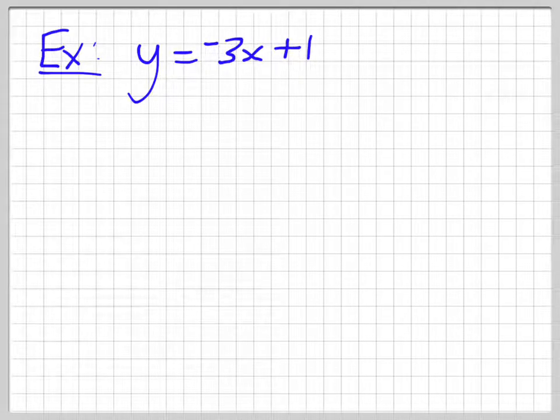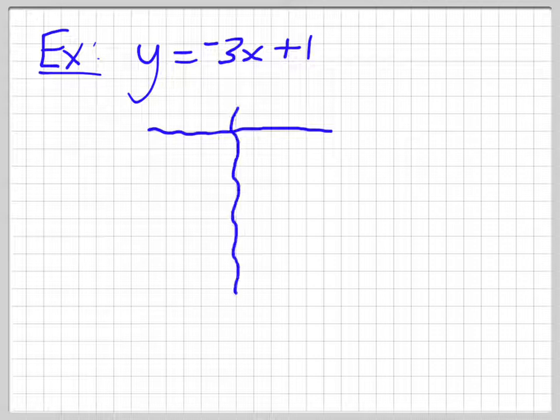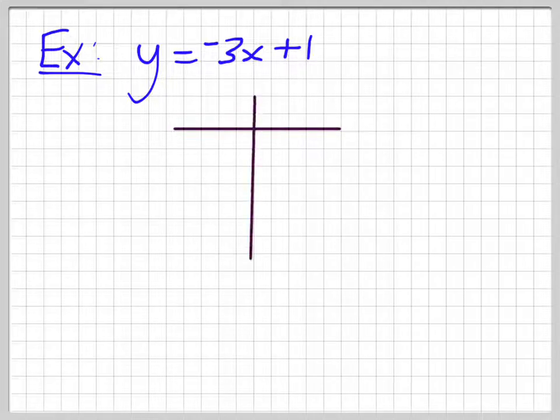So in order to make a table of values, basically we choose our x values whatever we want them to be. I'll make a straight line, make it look nice and neat. And so we make a table of values with an x value and y value.